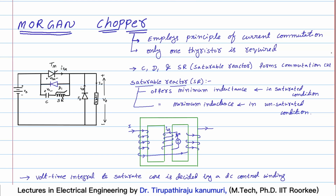Before proceeding, let us first discuss what this saturable reactor is - I am going to discuss only briefly, as detailed analysis is beyond the scope of this course. The basic characteristic of the saturable reactor is that it offers minimum inductance when it is in the saturated condition - very less inductance. Whereas when it is in the unsaturated condition it acts almost like an open circuit, offering very high reactance.